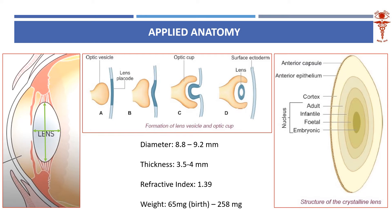The first important point for understanding cataract is the structure of the human lens. The lens has an anterior capsule which is flatter and a posterior capsule which is more steep and thinner. The lens contains cortex, epinucleus, and nucleus — these are the three known structures.